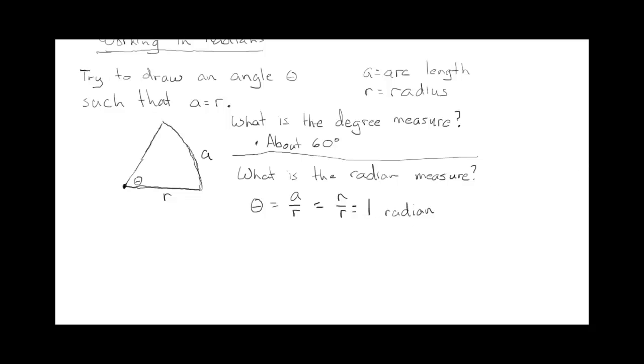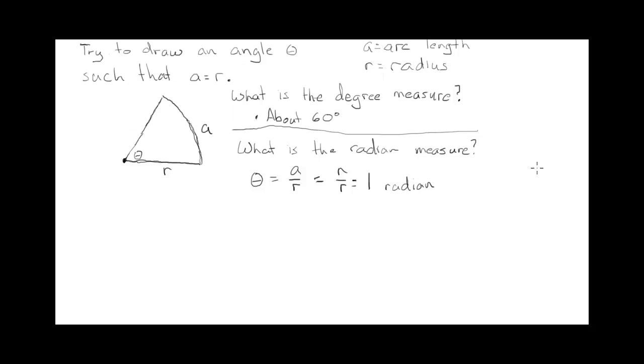Actually, what you're going to see is, usually when we're measuring in radians, we don't actually write any units. So we just write is equal to 1. Sometimes, if we want to specify, we will say 1 radian, and write the word, or you sometimes see it abbreviated RAD.